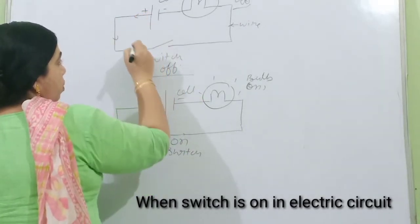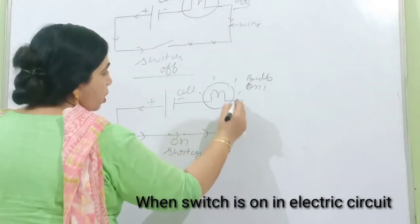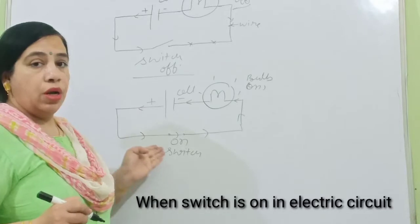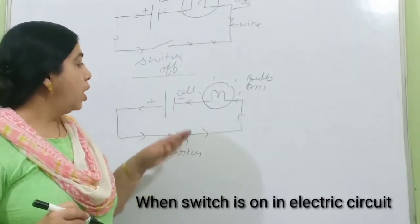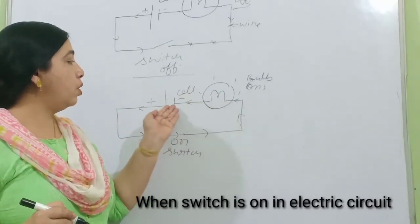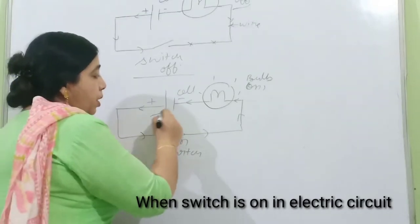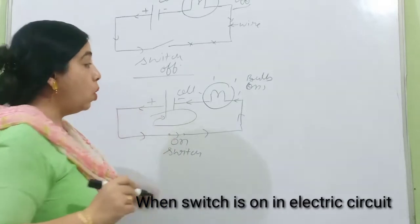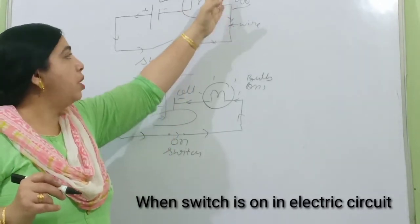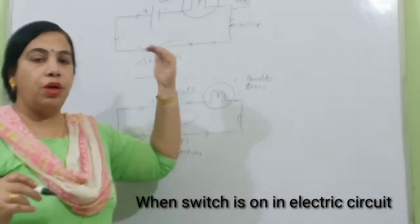Current flows from the positive terminal through the whole circuit and then enters the negative terminal. The direction of current is: it comes out from the positive terminal and enters the negative terminal. This is the complete electric circuit with a continuous closed path. If there is a broken path, current will not flow and the appliance will not get current. When the path is unbroken, current will continuously flow and appliances will be switched on.